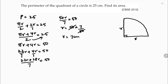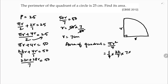Now finding the area of the quadrant: area = (1/4)πr² = (1/4) × (22/7) × 7 × 7. Simplifying: the 7s cancel to give (1/4) × 22 × 7 = 154/4 = 38.5 cm². So the area of the quadrant is 38.5 square centimeters.